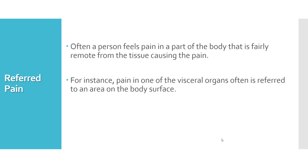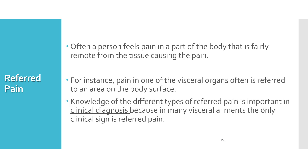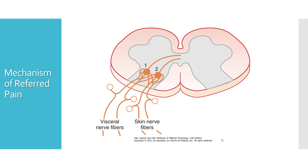Referred pain is a very important concept in clinical practice. Often a person feels pain in a part of the body that is fairly remote from the tissue causing the pain or where the actual damage is occurring. For example, pain in one of the visceral organs is often referred to an area on the body surface. A very common example is pain of angina or myocardial infarction — the injury is in the myocardium and the pain is usually felt in the left arm, forearm, and jaw. The mechanism of referred pain is the common origin of visceral and somatic nerve fibers in the embryo.